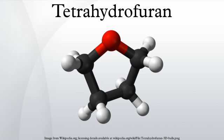The butanediol is derived from condensation of acetylene with formaldehyde followed by hydrogenation. DuPont developed a process for producing THF by oxidizing n-butane to crude maleic anhydride followed by catalytic hydrogenation.